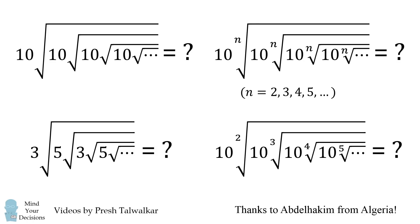I thank Abdelhakim from Algeria for suggesting this. In fact, the problem with alternating three and five terms appeared on a math competition for third-year students in high school, which would be about 16 and 17 year olds. Can you figure these out? Give them a try and when you're ready, keep watching the video for a solution.